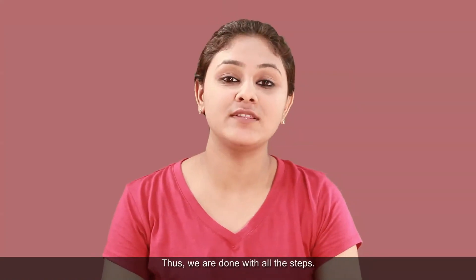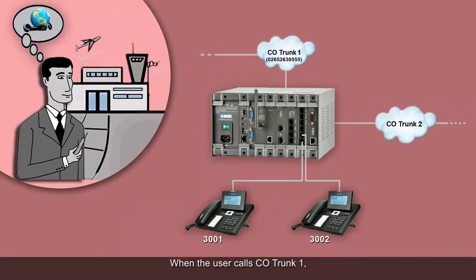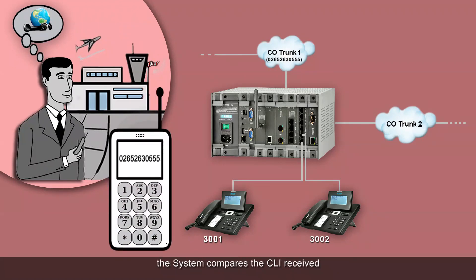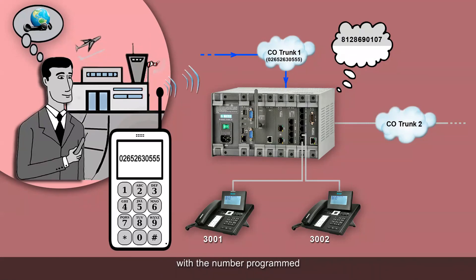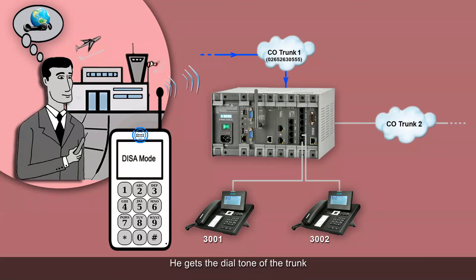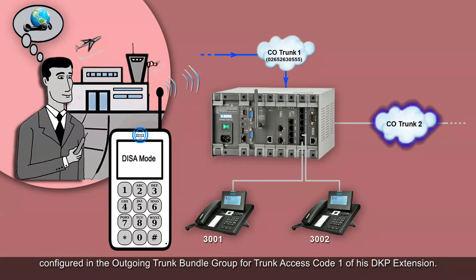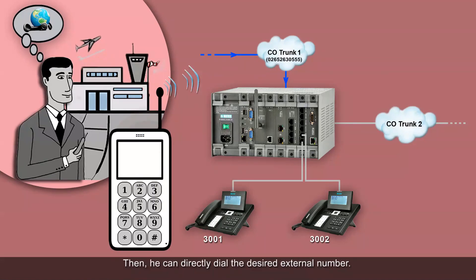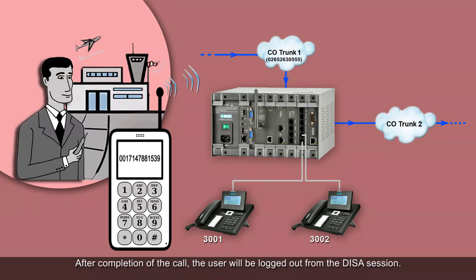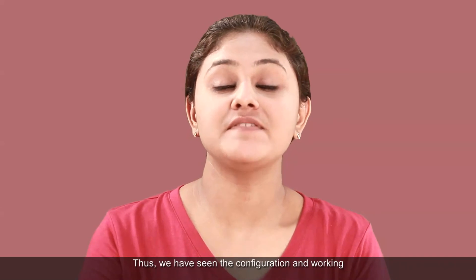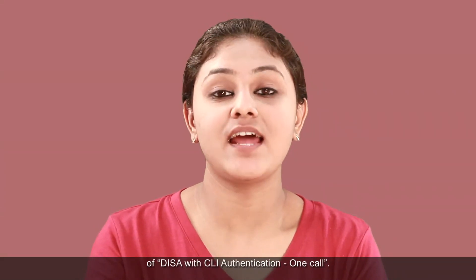Thus, we are done with all the steps. Now let us see how this feature works. When the user calls CO trunk 1, the system compares the CLI received with the number programmed in the CLI Authentication Table. If the user's CLI matches, he successfully logs into DISA mode. He gets the dial tone of the trunk configured in the outgoing trunk bundle group for trunk access code 1 of his DKP extension. Then he can directly dial the desired external number. After completion of the call, the user will be logged out from the DISA session. Thus, we have seen the configuration and working of DISA with CLI Authentication One Call.